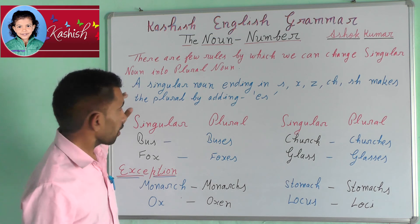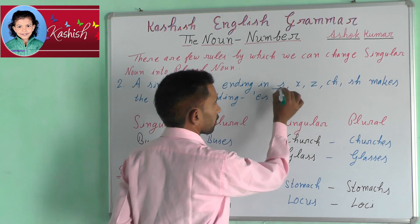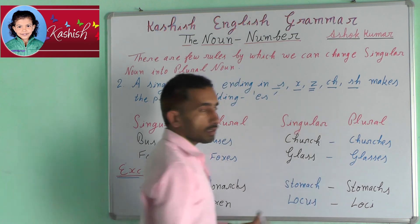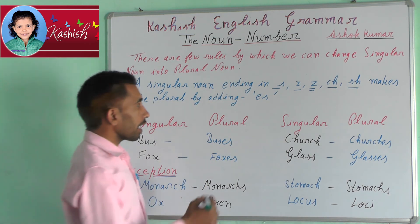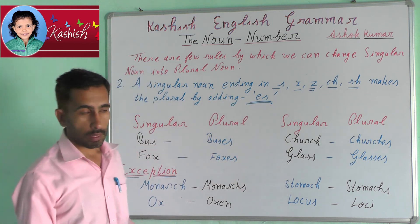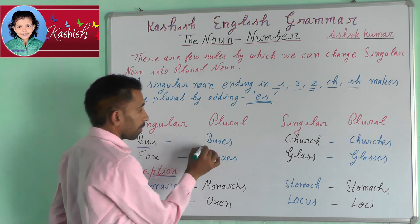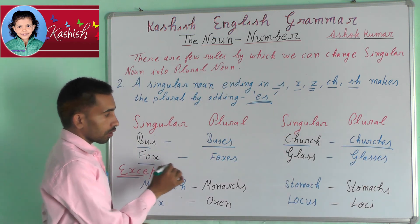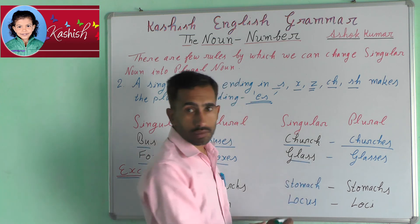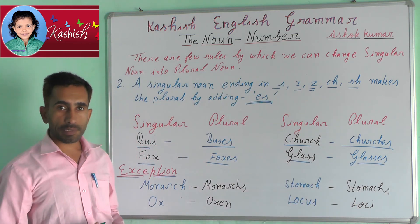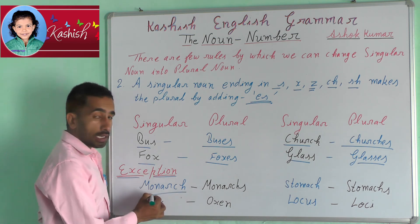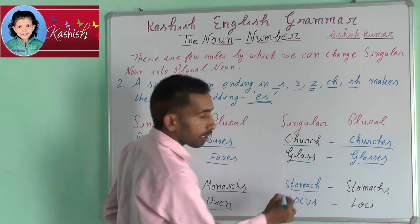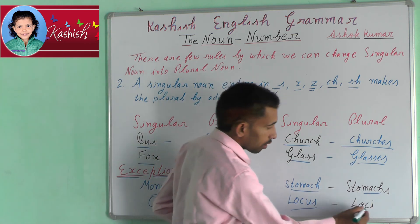Second rule: a singular noun ending in S, X, Z, CH, SH makes the plural by adding ES. For example: bus → buses, church → churches, fox → foxes, glass → glasses. Exception: monarch, ox → oxen, stomach, locus → loci.